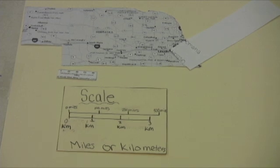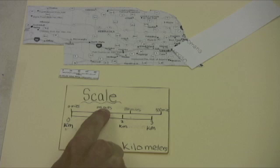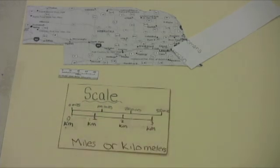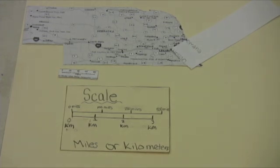The number on the top of the scale gives the distance in miles. The number on the bottom gives the distance in kilometers. Since we are in the U.S., we use miles.